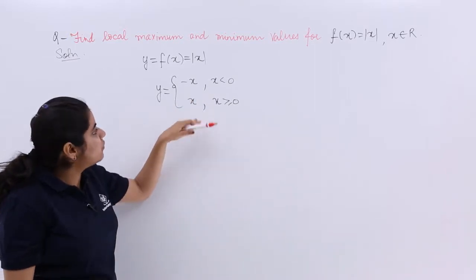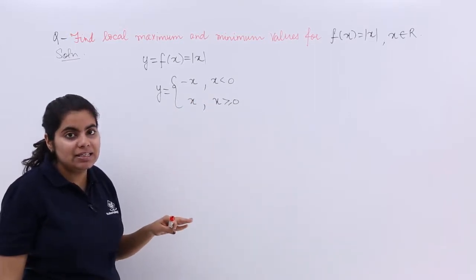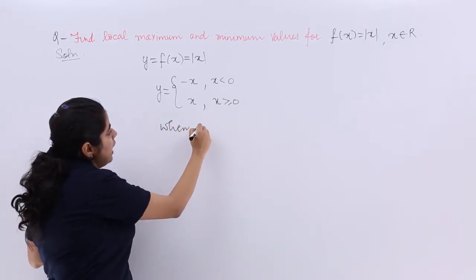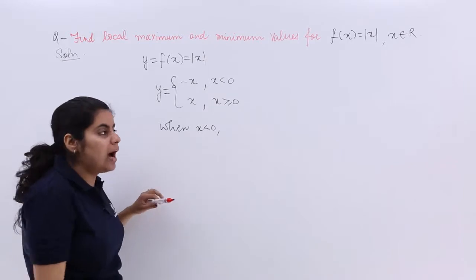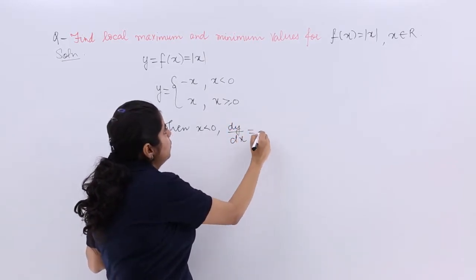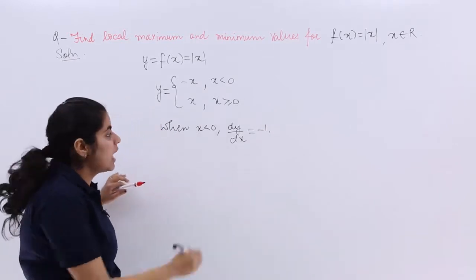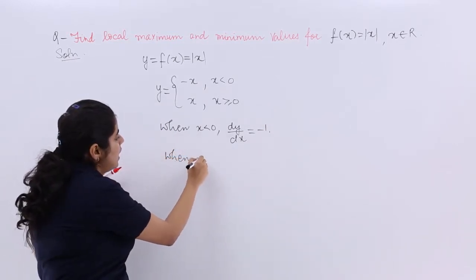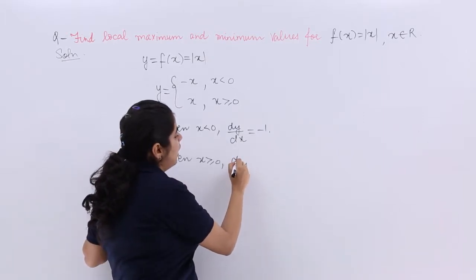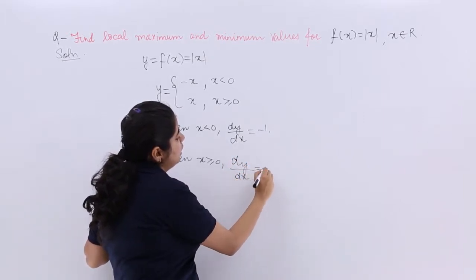Now if I have to find dy/dx, I can say that when x < 0, dy/dx = -1, and when x ≥ 0, dy/dx = +1.